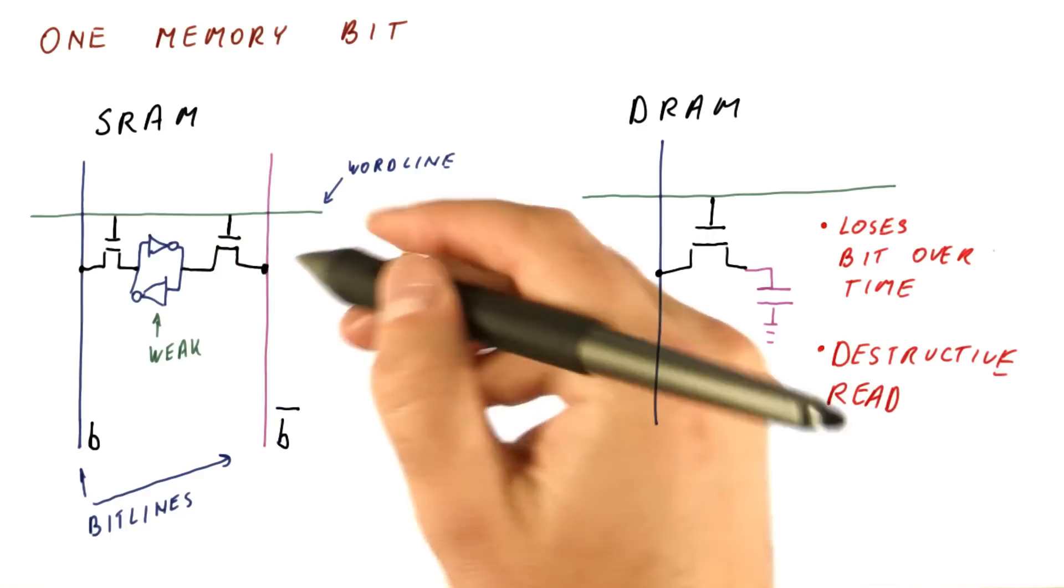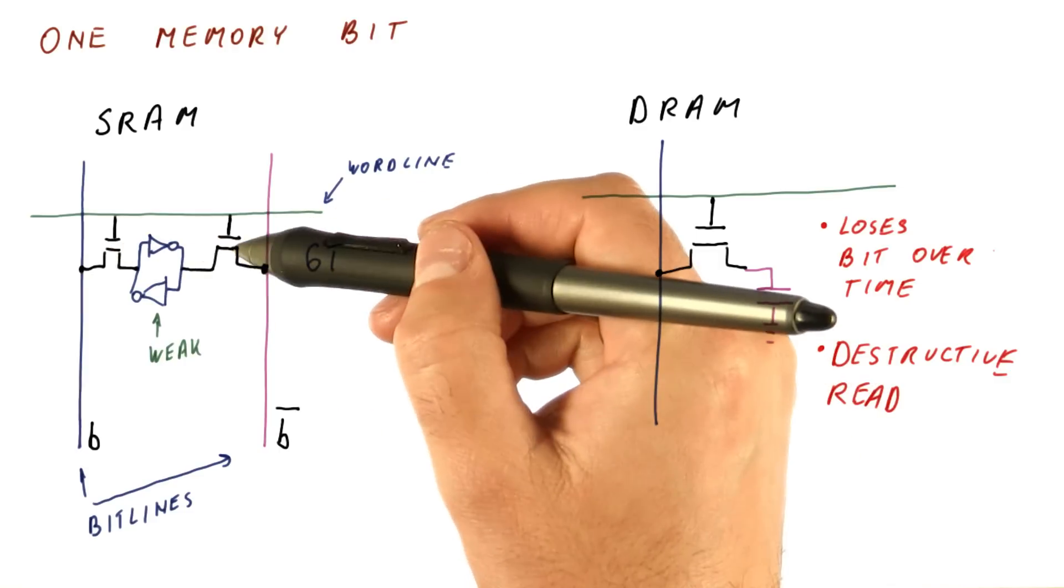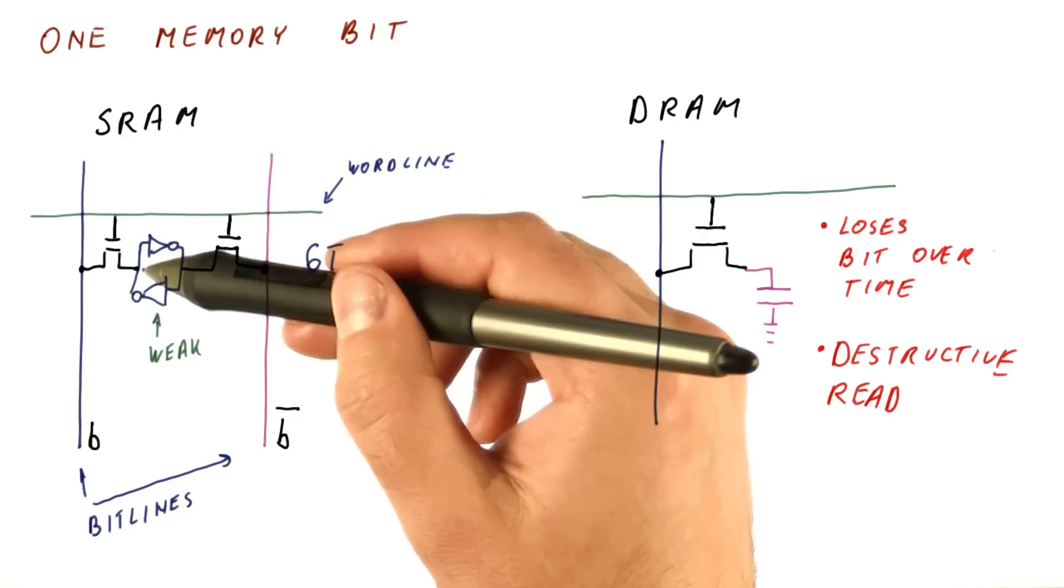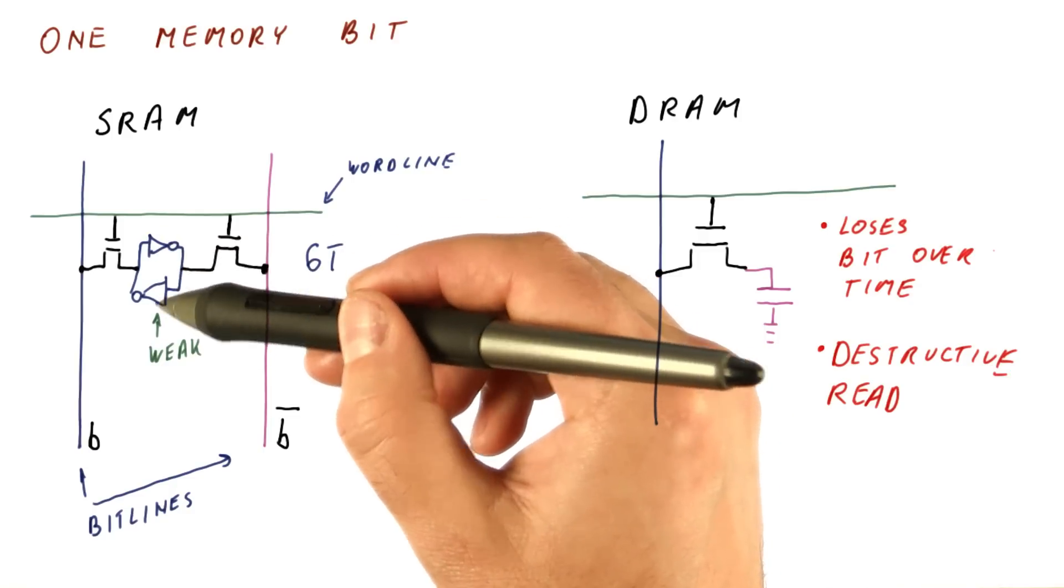So this is what is usually called a 6T cell, or 6 transistor cell. There are two transistors that are therefore connecting to the cell, and there are four transistors in the cell itself, because each of the inverters has two transistors.